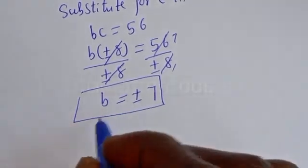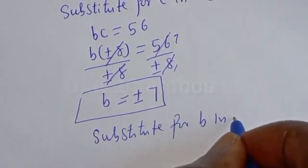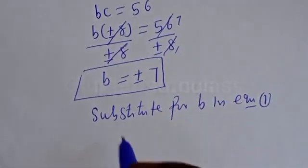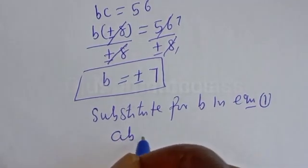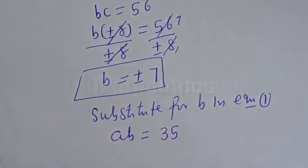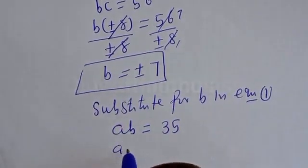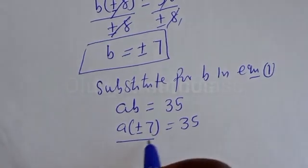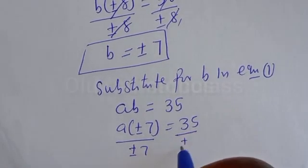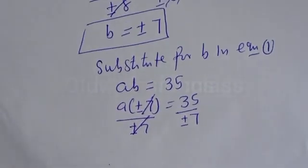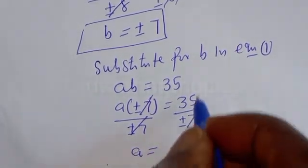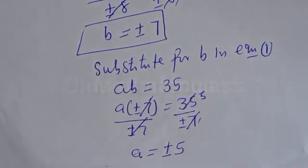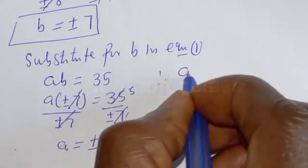Now we can substitute for B in equation 1 to get the value of A. Equation 1 is AB=35 and B is plus or minus 7. So A×(±7)=35. Dividing both sides by ±7, the 7s cancel, giving A is equal to plus or minus 5.